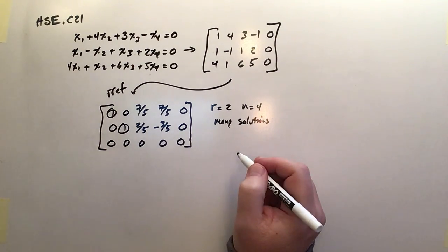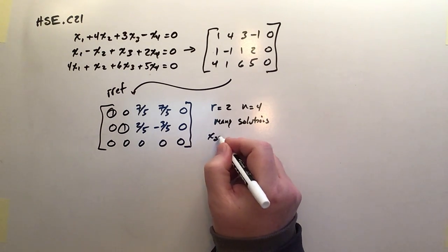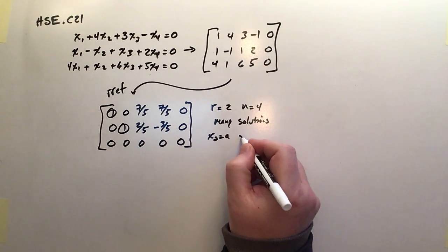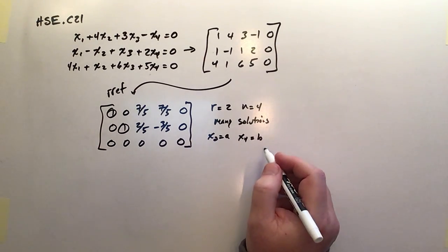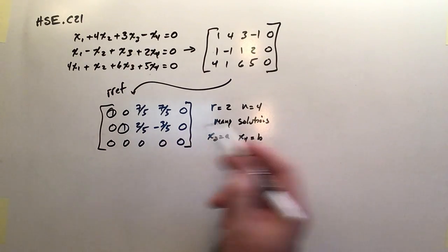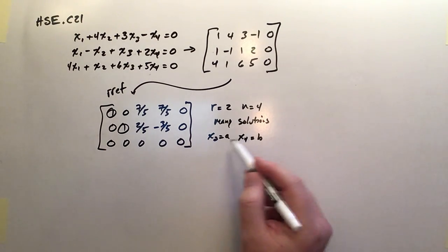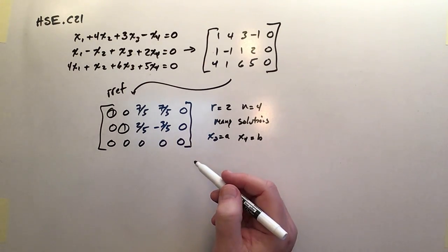And in order to start specifying them, I can just sort of assign things. So I'm going to say that x3 is equal to a and x4 is equal to b, where they can be any number. So a and b are just elements of the real number set, or I guess we're using the complex number set later on. We'll see that our matrices, our systems, can certainly have complex solutions.